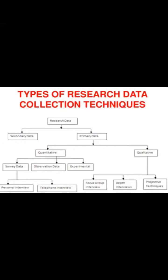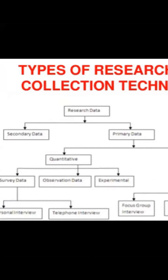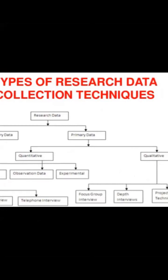I am showing you a chart of types of research data collection techniques. Basically, I have to discuss the interview, but first let me zoom in on the research data. When we collect research data, there are two types: secondary data and primary data. Secondary data is data we have already studied from a website or a government source. Primary data has two types: quantitative and qualitative.